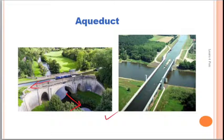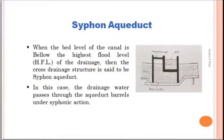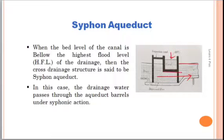Next, siphon aqueduct. In this figure, the river is running in one direction and the canal is running perpendicular to it. This is the highest flood level of the river and this is the bed level of the canal. From the figure it is clearly shown that the highest flood level of the river is above the bed level of the canal.